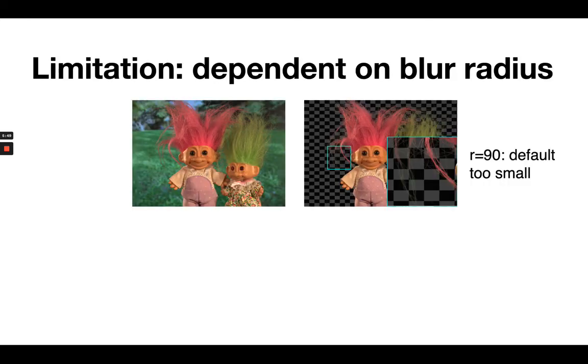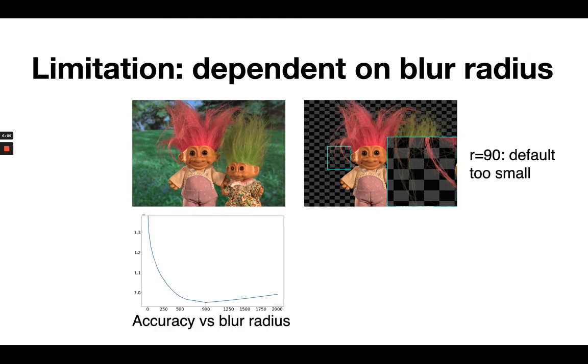There is a limitation of our method in that the radius of the blur can be quite dependent on the image. Now in images where there's a very wide foreground region, we would actually sometimes prefer a large radius of blur. We can see that in this image here of the two trolls. We plot the accuracy versus the blur radius. And for the default radius, which we use for all our experiments, r=90, we actually get quite a poor result where the green background is seeping through where there should be pink hair.